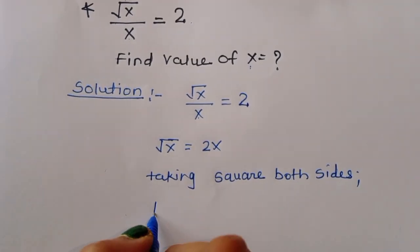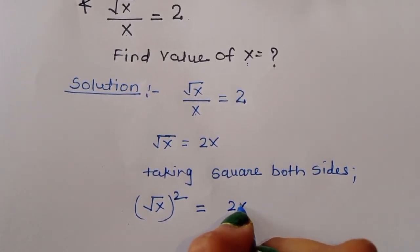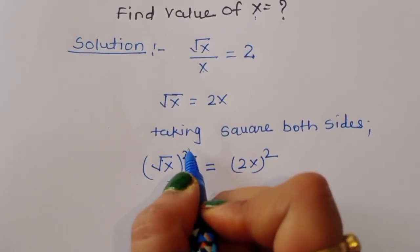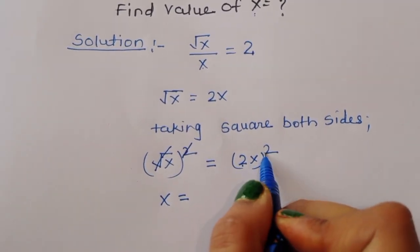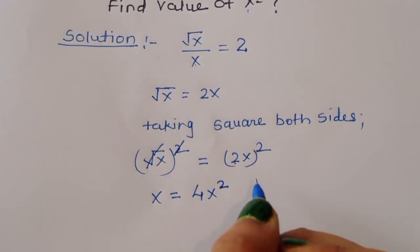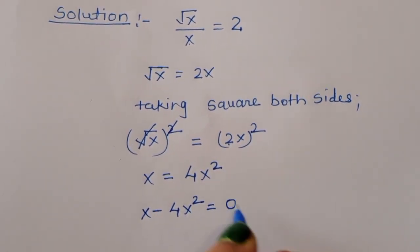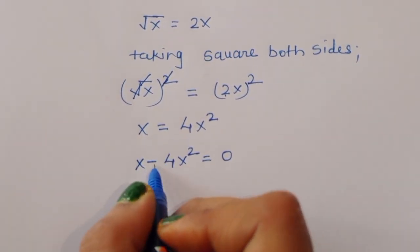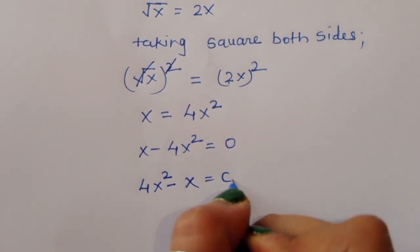Taking square on both sides, we will get: square root of x, whole squared, is equal to 2x whole squared. Now square and square root cancel. So x is equal to 2 to the power 4 times x squared, which we can write as x is equal to 4x squared. Now x minus 4x squared is equal to 0, or multiplying by minus 1, we get 4x squared minus x is equal to 0.